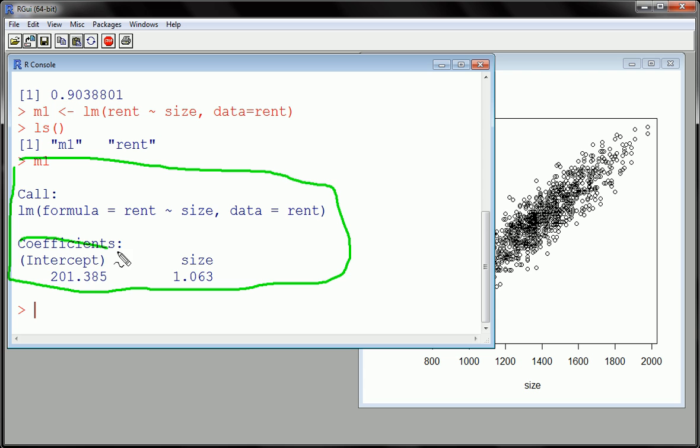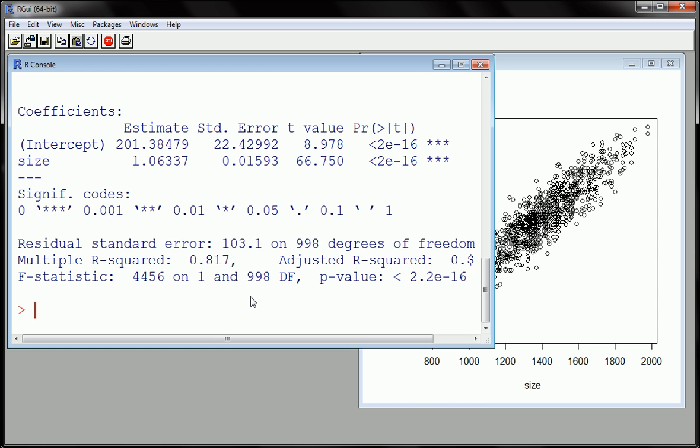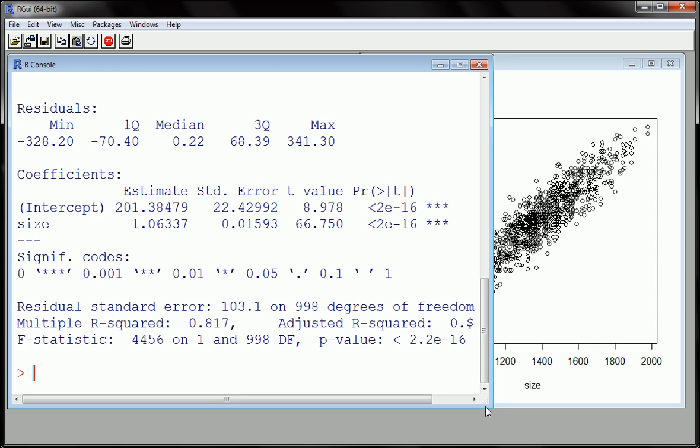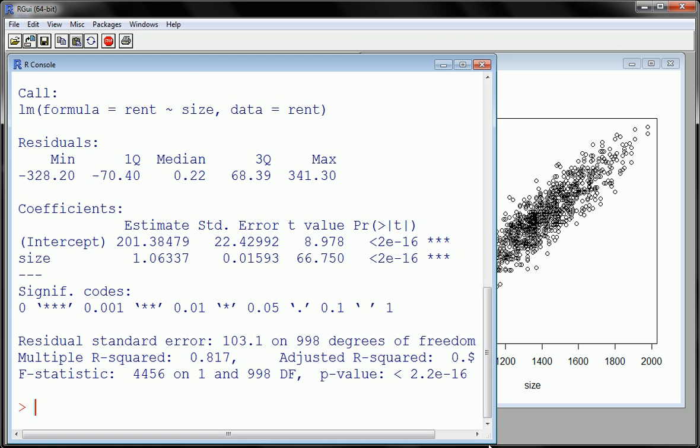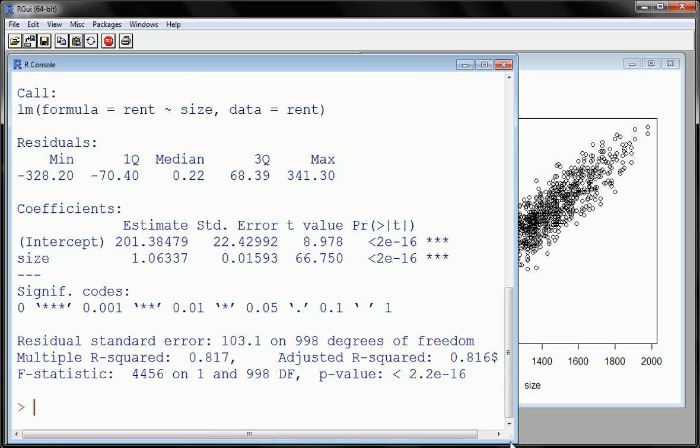All right, you get the coefficients, and those were the, that's the b0 and the b1. So, there's a much more kind of comprehensive output you can get by using the summary function. So, get the summary of m1. Let me just scroll down so we can see all the output we get here. I'm on big font.